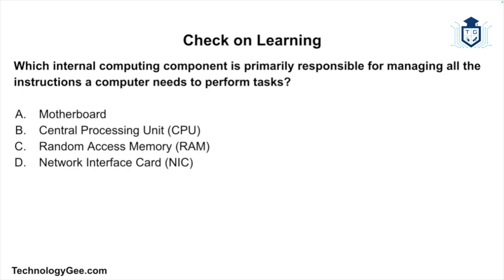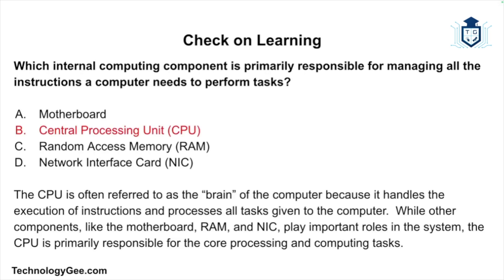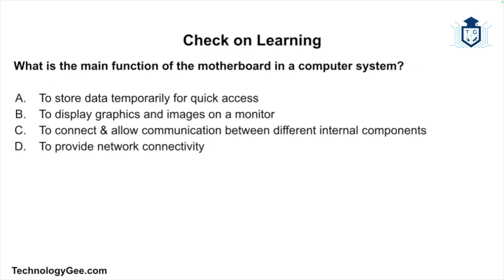Let's do some check-on-learning. Question one: which internal computing component is primarily responsible for managing all the instructions a computer needs to perform tasks — the motherboard, the central processing unit, the random access memory, or the network interface card? The answer is the CPU, the Central Processing Unit. The CPU is often referred to as the brain of the computer because it handles the execution of instructions and processes all tasks given to the computer.